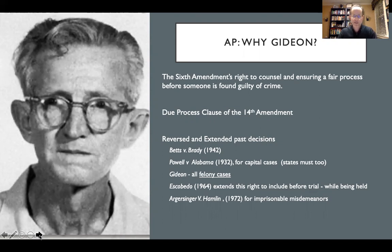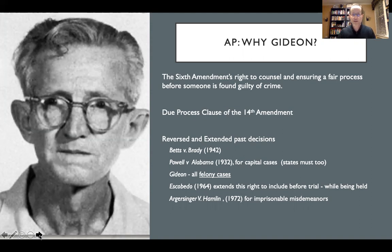The case decided by the Supreme Court becomes a precedent-setting one: all criminal defendants in felony cases will receive representation. In doing this, it overturns the case of Betts v. Brady, which had chosen not to require states to abide by that. The Alabama case of 1932 was the one that required counsel for capital cases. After Gideon, you have Escobedo, which extends the right to counsel not simply during trial, but before — while you're being held, questioned, detained, etc.